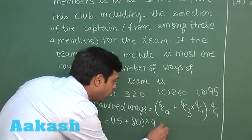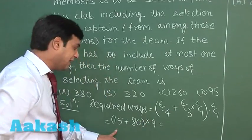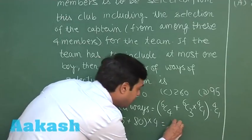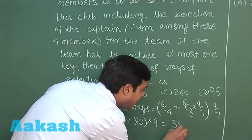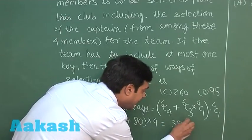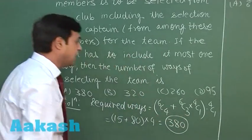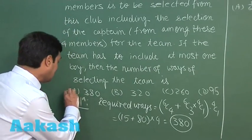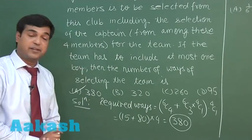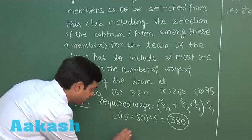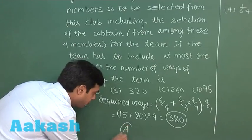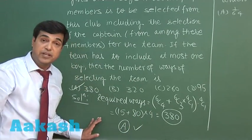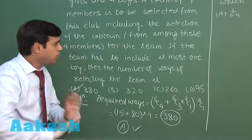So we get (15 + 80) × 4 = 95 × 4 = 380 as the correct result. From the given options, option A is correct. This is how we deal with it — quite a simple question from PnC.